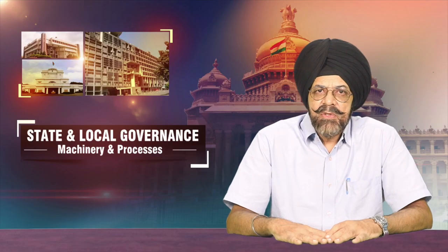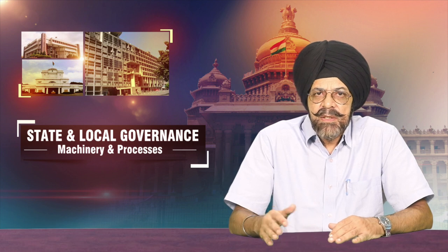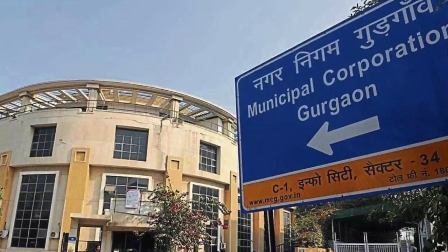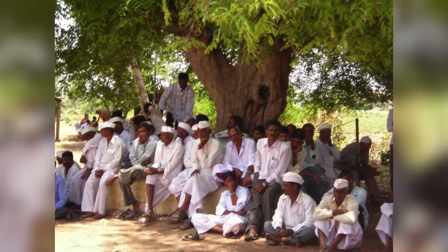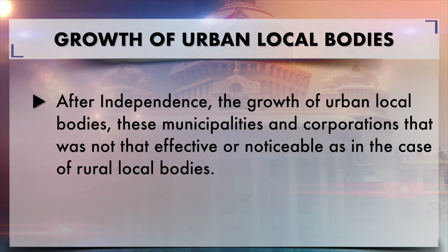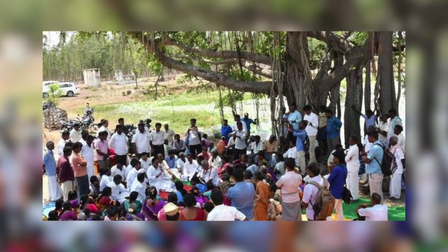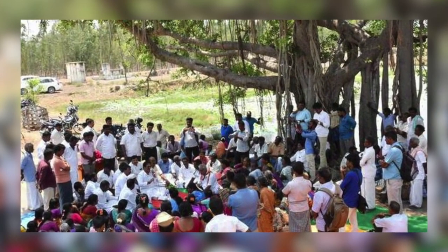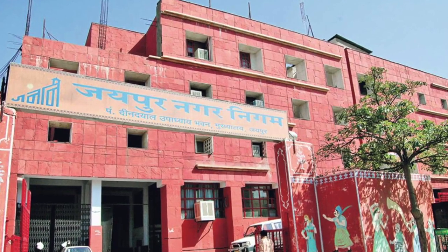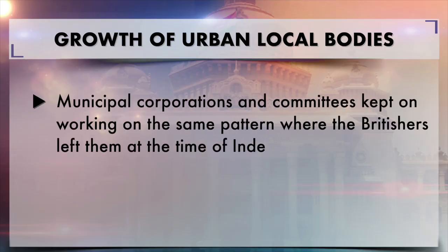As far as their development and growth is concerned, during the British period there was a growth of urban local bodies as compared to rural local bodies. But after independence, the growth of urban local bodies — these municipalities and corporations — was not that effective or noticeable compared to rural local bodies. In the case of rural local bodies, a number of commissions and committees were established and a three-tiered Panchayati Raj system was established after the recommendation of the Balwantra and Mehta committee. But municipal corporations and committees kept on working on the same pattern where the Britishers left them at the time of independence.